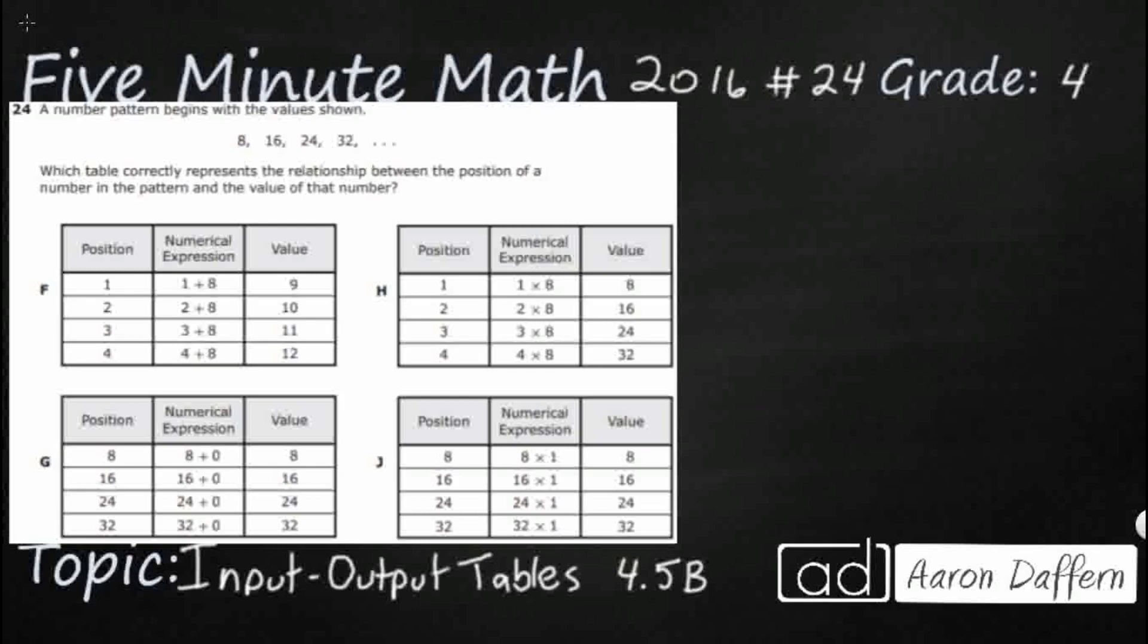So we have a number pattern, and it begins with these four simple numbers: 8, 16, 24, 32. Looks like we're skip counting by 8. We've got four different tables we need to look at, but let's see what it's asking us. We have to represent the relationship between the position of a number in the pattern and the value of that number.